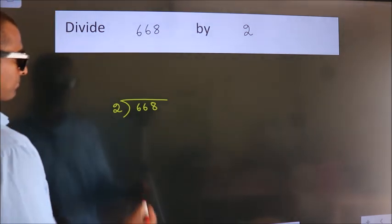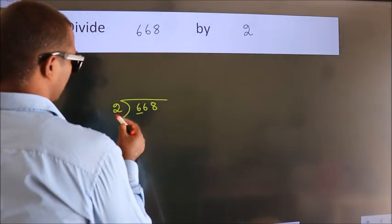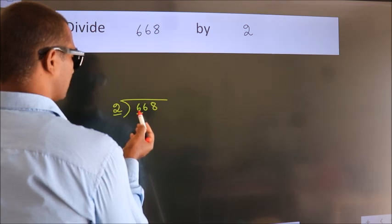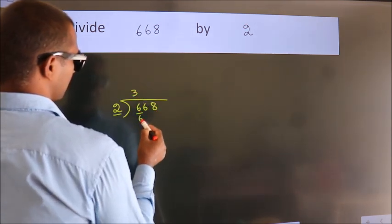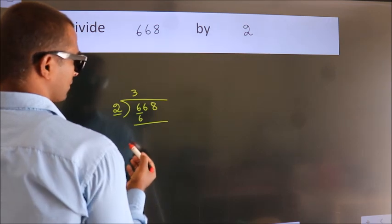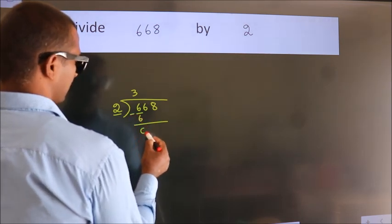Here we have 6, here 2. When do we get 6 in the 2 table? 2 threes, 6. Now we should subtract. We get 0.